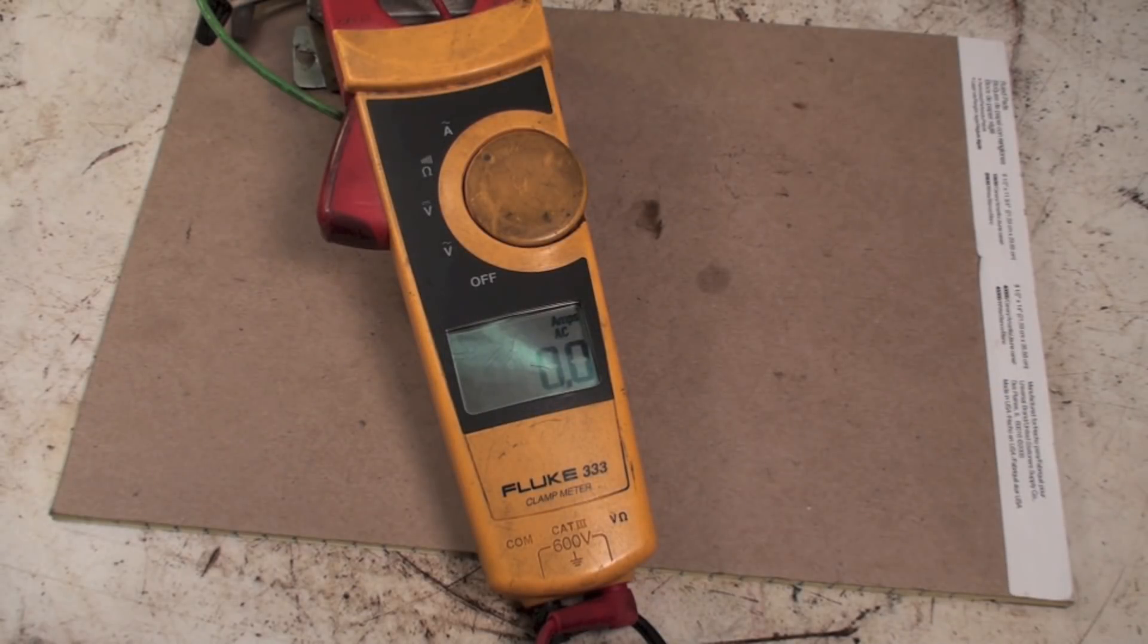Now they don't fail right away. Notice my ammeter clamped around one wire, and if I plug this thing in, okay, now it's showing zero amps. I'm going to plug this thing in. Now it's showing eight amps.